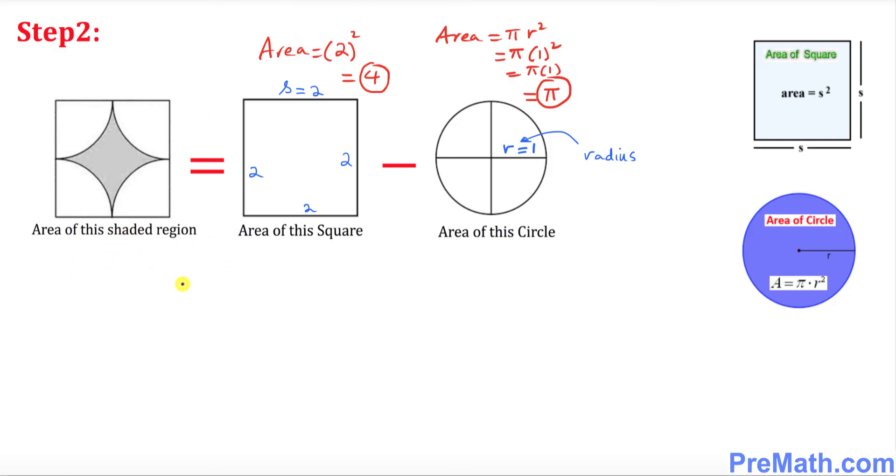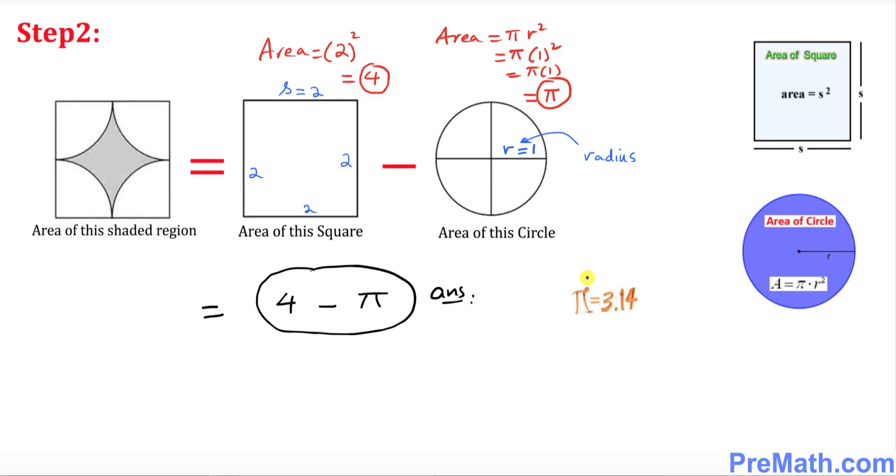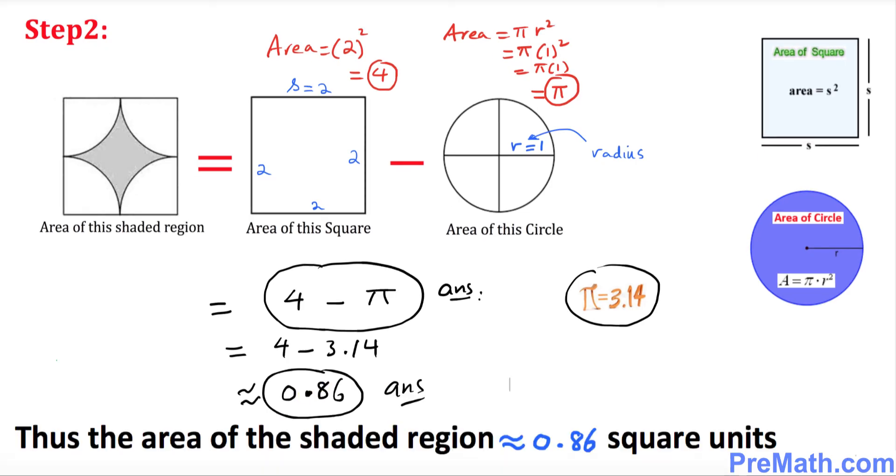So far so good. Now let's go ahead and take care of this. The area of this shaded region is going to be equal to 4 minus the area of this, which turns out to be pi. If you want to leave your answer in terms of pi, that is your answer. But if you want to find the value, pi is 3.14, so let's put down 4 minus 3.14. Our area is going to be approximately equal to 0.86.